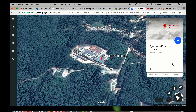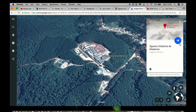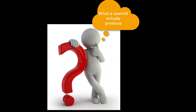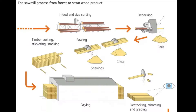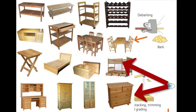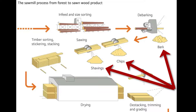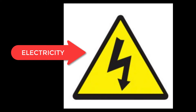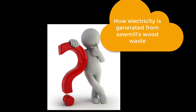But actually it's not — it has something we will discuss later in this summary. But first, what does a sawmill actually produce? Sawmills normally produce timber, dry some timber that is raw material for the furniture industry, but also produce waste byproducts in the form of bark, chips, and shavings. These can be used as raw material for electricity. So how is electricity generated from a sawmill's wood waste?